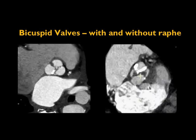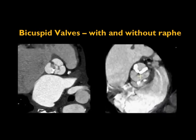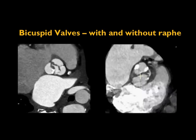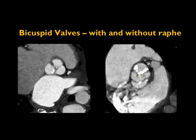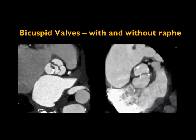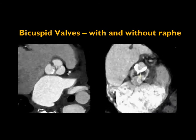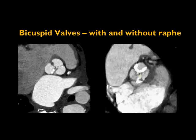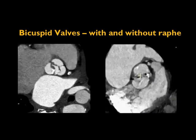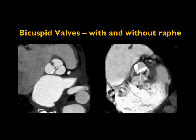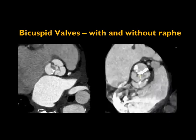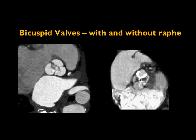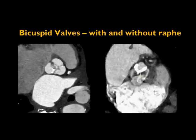There are a couple of variants of bicuspid valves. The simpler variant has two discrete valve leaflets — easy to identify. However, the more common presentation is fusion of two valve leaflets, typically the right and left, with a ridge in between called a raphe. That patient has a bicuspid valve too — with an incomplete valve orifice opening and a fish-mouth appearance — but it's tougher to diagnose without cine imaging.